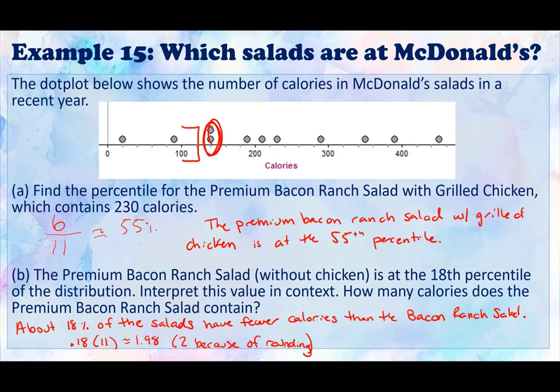And if we look, it looks like these marks are all by 20 calories. So it looks like the bacon ranch salad without chicken has 140 calories. This is probably one of the more mathier things you've done so far in this class. Let's keep going.